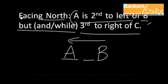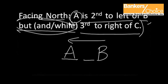And by looking at the second part of the statement, that is but third to the right of C. Now whenever the words but or and or while are used, it is referring to the first person A. That means A is third to the right of C. So A is towards right and three places away from C. So this is how we can place the persons C, A and B in the row.